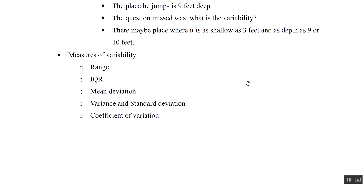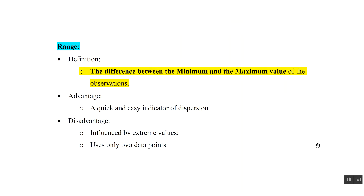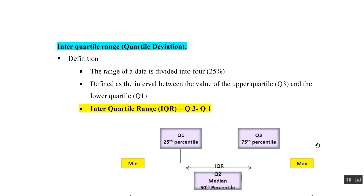The measures of dispersion or variability are five: range, IQR (interquartile range), mean deviation, variance, and standard deviation, and coefficient of variation. Range is the difference between the minimum and maximum value. Its advantage is that it is quick and easy; its disadvantage is that it is influenced by extreme values and uses only two data points. IQR divides the total range into four sections of 25 percent each.